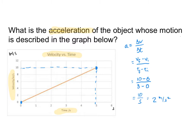So acceleration equals 10 over 5, or 2 meters per second squared. The key takeaway: to find acceleration, find the slope of a velocity versus time graph. Note — if your graph is not a velocity versus time graph, such as acceleration versus time or position versus time, you cannot use slope for this purpose.